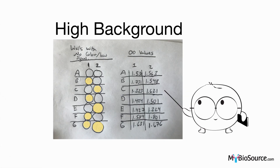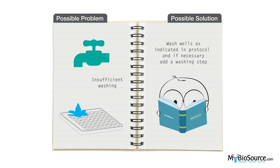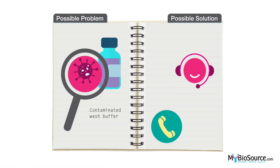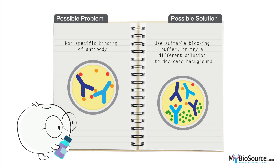Moving on to problems with high background. The following scenarios may cause these: insufficient washing during the washing step. Please confirm wells are washed according to the protocol, and if necessary you may add a washing step. In rare occasions the wash buffer may be contaminated; in this case please contact our technical support team for further instructions. High background may also be due to nonspecific binding of the antibody; therefore you may want to try using a suitable blocking buffer or a different dilution factor to decrease background.